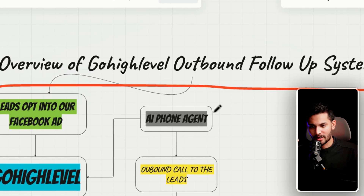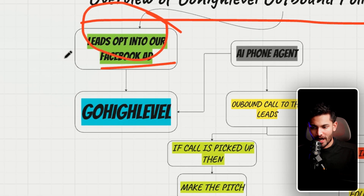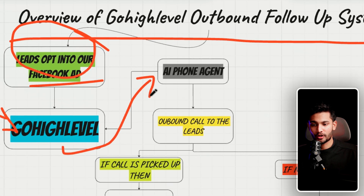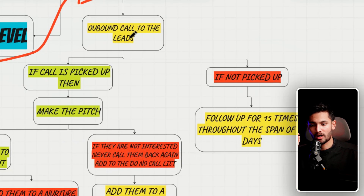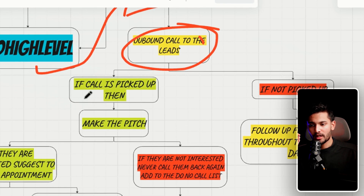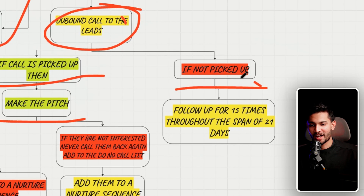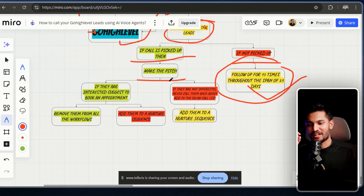Let's say a lead clicks your Facebook ad and comes into GoHighLevel via the Facebook integration. Then via the workflow we're going to create, GoHighLevel sends that lead's data to the AI phone agent, and the AI phone agent makes an outbound phone call. If they pick up, it makes the pitch.